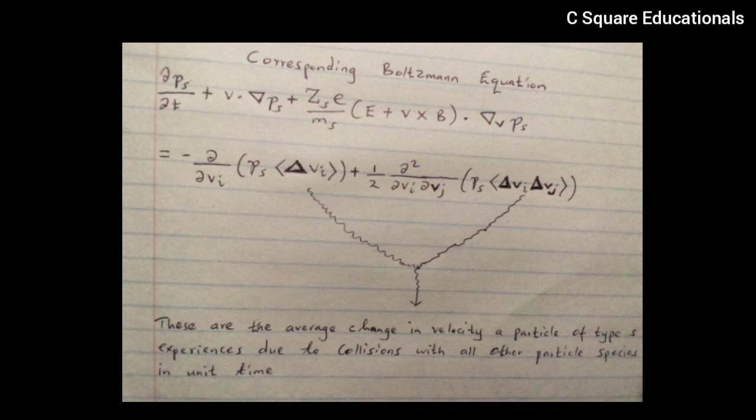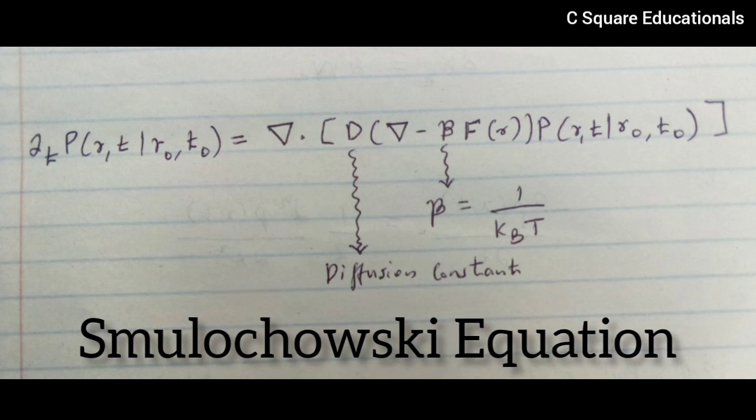If collisions are ignored, the Boltzmann equation reduces to the Vlasov equation. The Smoluchowski diffusion equation is the Fokker-Planck equation restricted to Brownian particles affected by an external force. The importance of this equation is that it allows for both the inclusion of the effect of temperature on the system of particles and a spatial-dependent diffusion constant.